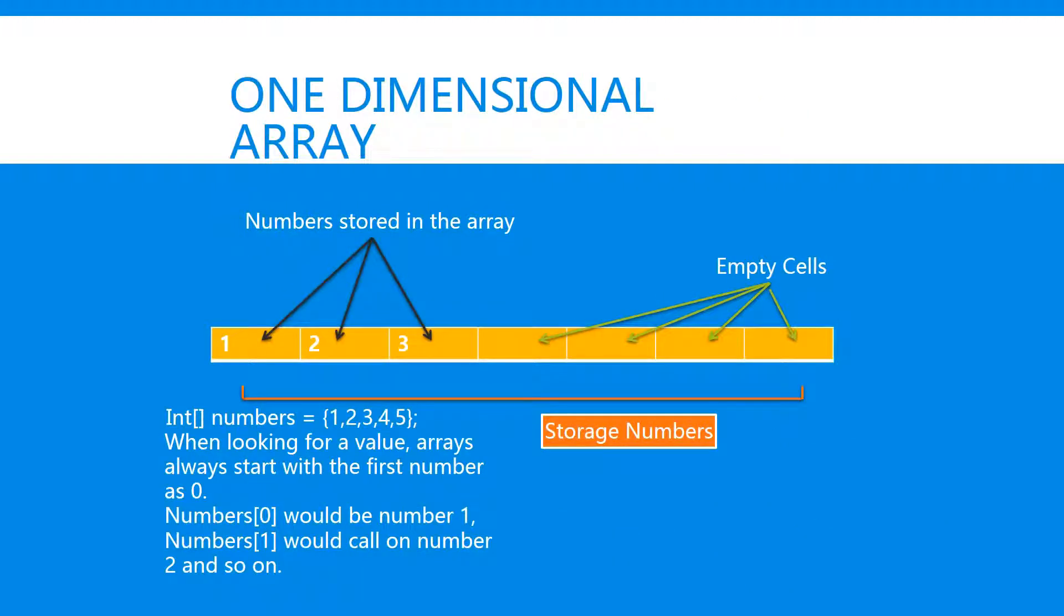A one-dimensional array might be that you've got something like a number and you want to store multiple numbers in this list. So in which case this would be 0, 1, 2, 3, 4, and so on.